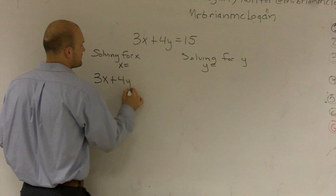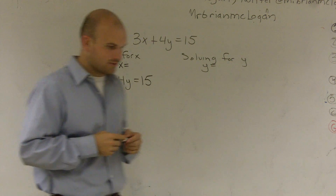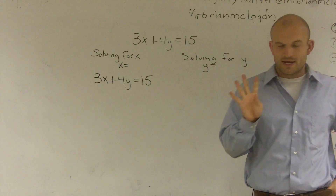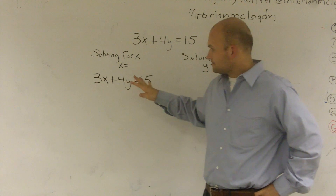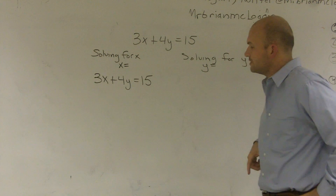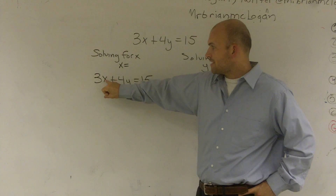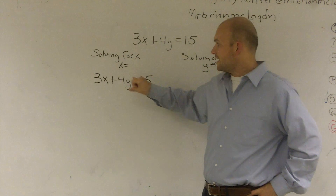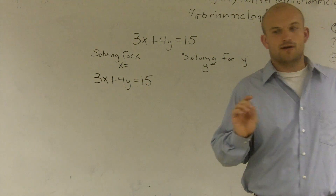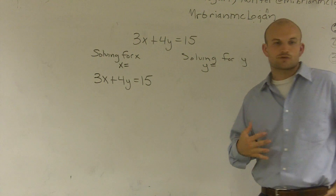If I have 3x plus 4y equals 15, there are a couple of operations we're going to work with — the four operations: adding, subtracting, multiplying, dividing. For a problem like this, what you can see is: what are my two operations that are happening? I have multiplication of my variable times 3, and I have addition of 4y.